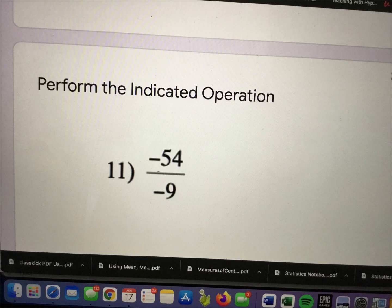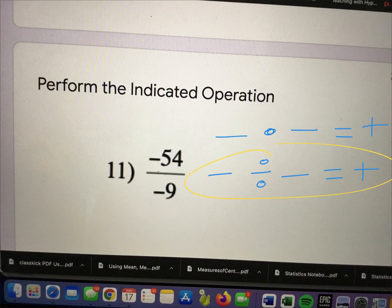And then again, the rules for multiplying and dividing are the same. So in the previous example, we showed that a negative times a negative equals a positive. It's the same thing when you're dividing. A negative divided by a negative is also a positive. So using that rule, negative 54 divided by negative 9, 54 divided by 9 is 6. And then a negative divided by a negative is a positive. So you've got a positive 6.